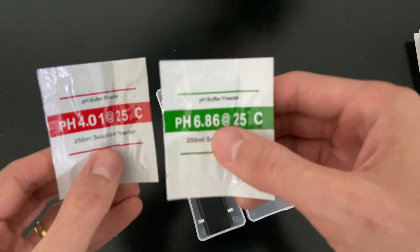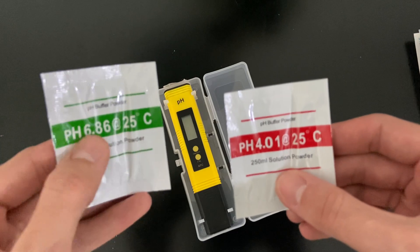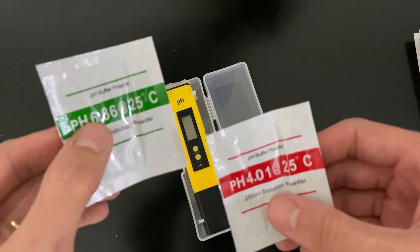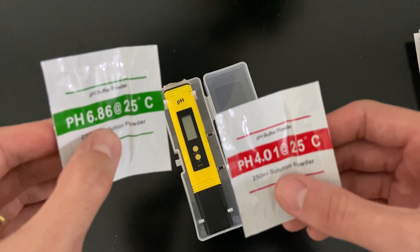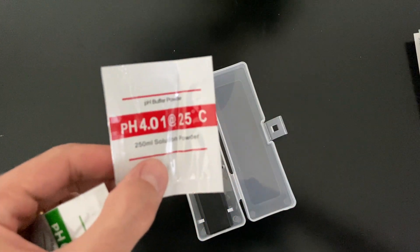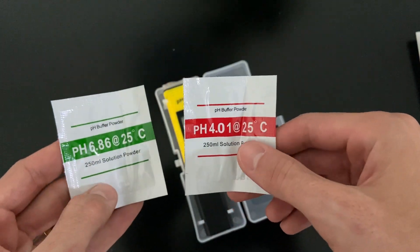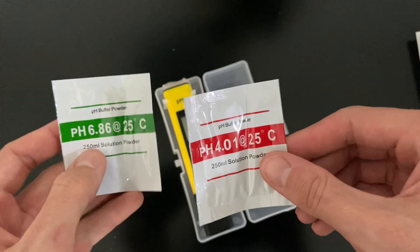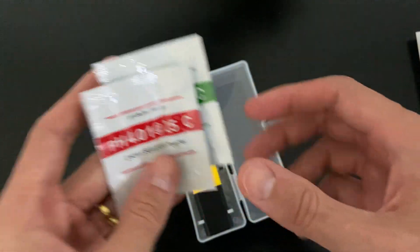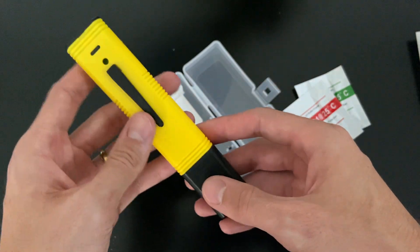Okay, so here we have two pH solutions. This one is 6.86 and this is 4.01. These are to calibrate the pH meter pen. Very cool. And this is the pH pen itself.